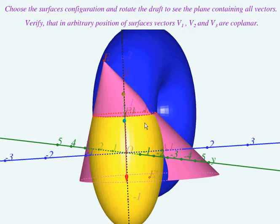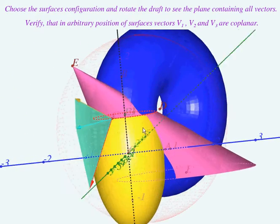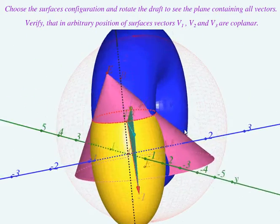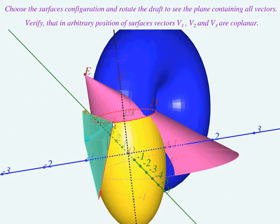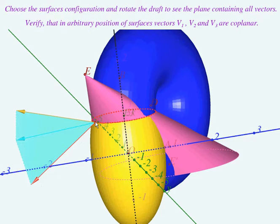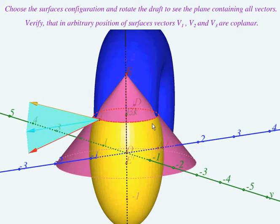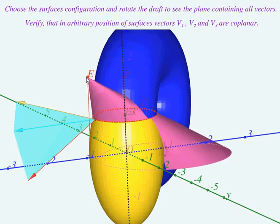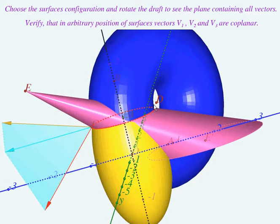Choose the surfaces configuration and rotate the draft to see the plane containing all vectors. Verify that in arbitrary position of the surfaces S1, S2, and S3, vectors V1, V2, and V3 are coplanar.